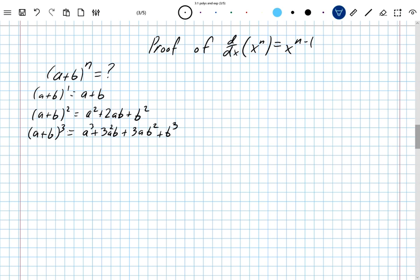So, you notice the pattern on the exponents, that the power on the a is going 3, 2, 1, 0, and the power on the b is going 0, 1, 2, 3.